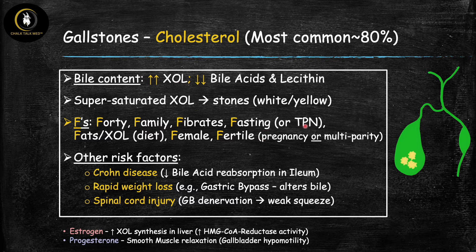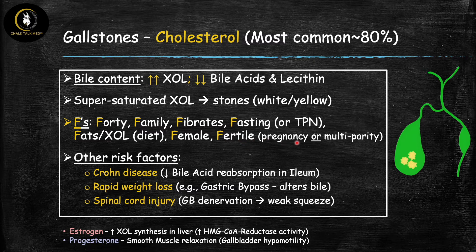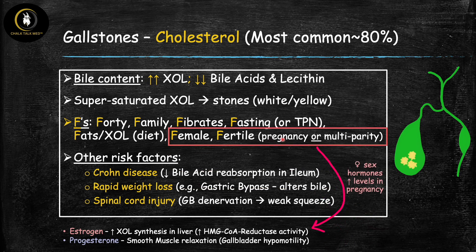Continuing the F's: fasting or TPN (total parenteral nutrition) — when you're not using the intestinal tract to eat, CCK is not released, so the gallbladder doesn't squeeze, causing bile stasis and stones. Fats and cholesterol in the diet can obviously increase cholesterol in bile. Finally, female sex and fertile (multiple pregnancy history) — these are high-yield for exams. The reason these are risk factors is the presence of female sex hormones, which increase the risk of developing cholesterol gallstones.